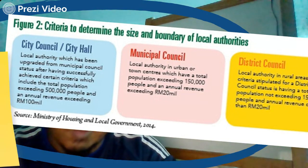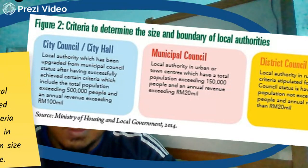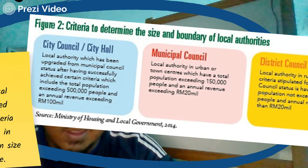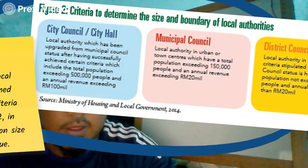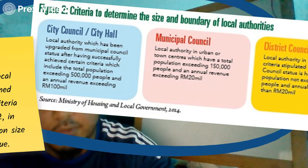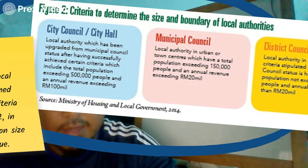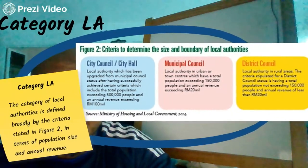To upgrade from district to municipal, the local authority must have a total population exceeding 150,000 people and annual revenue exceeding RM20 million. To upgrade from municipal council to city council, the criteria include a total population exceeding 500,000 people and annual revenue exceeding RM100 million per year. That is the categorization of local authorities.